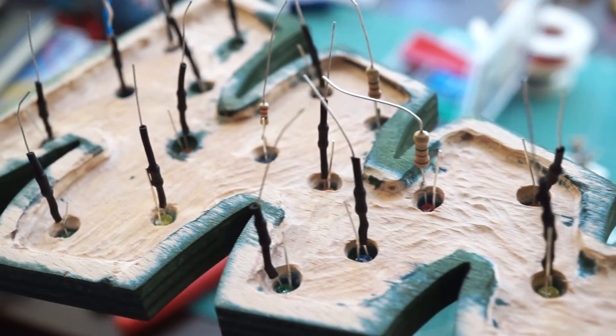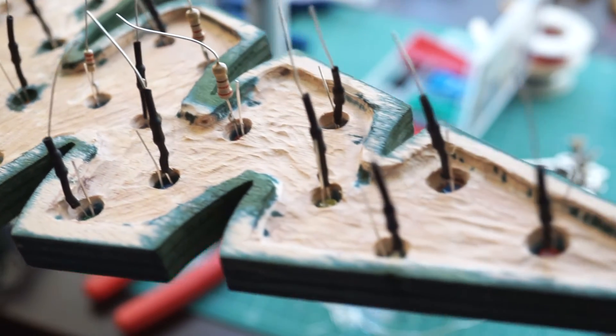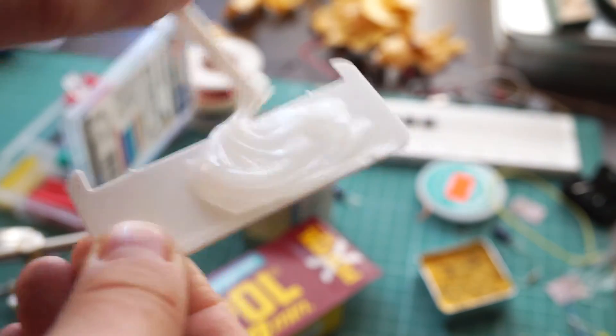Eventually, all 21 LEDs were ready, so I placed them in their holes, making sure that the colors were evenly spaced. Then I mixed up some two-component glue and glued all the LEDs in place.